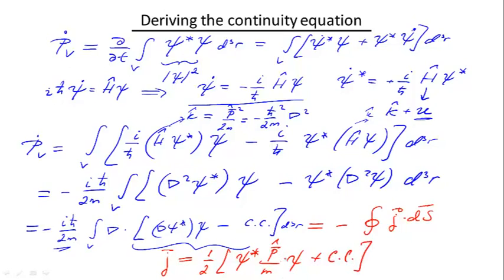And the reason I can write it like this is because P is an operator which is equal to minus iℏ∇, and this minus iℏ∇ appears here.